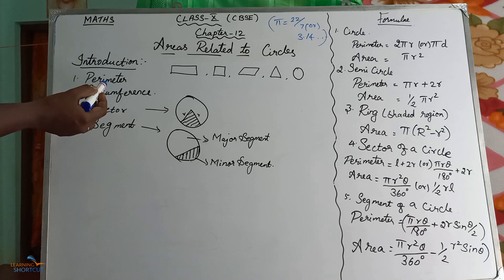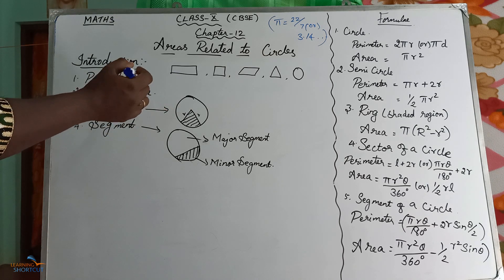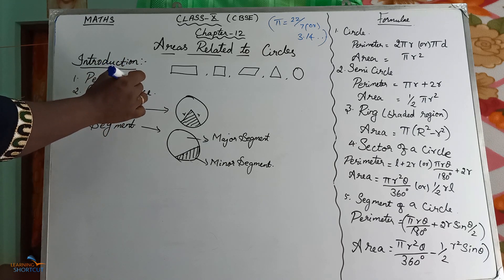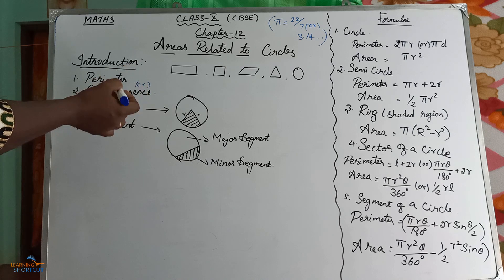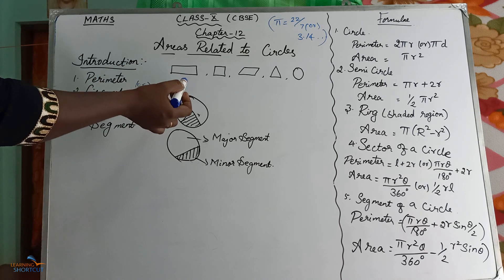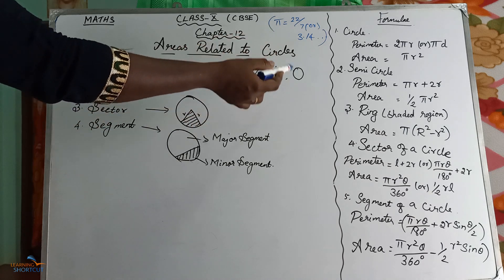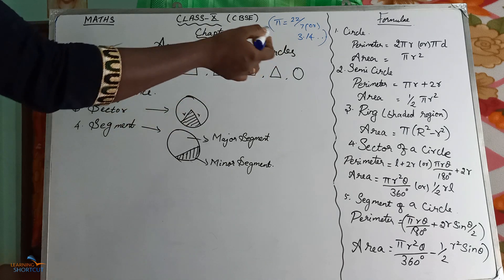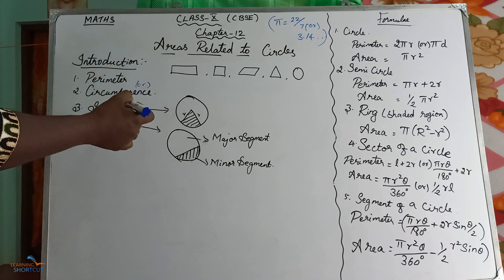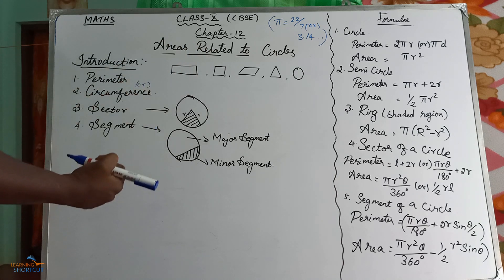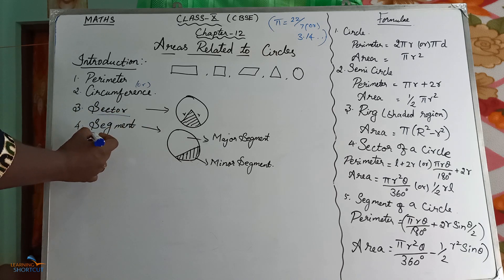We already know the perimeter and circumference of a circle. This perimeter is otherwise called as circumference. So perimeter of a rectangle, triangle, square, parallelogram, and circle — like that we have studied already in our lower classes. In this chapter you are going to study extra, that is about the sector and the segment.